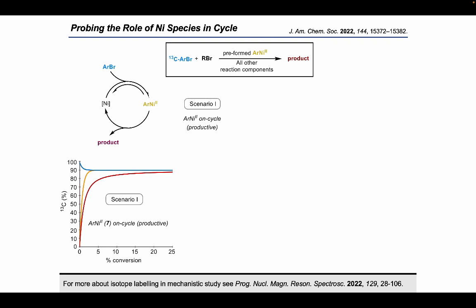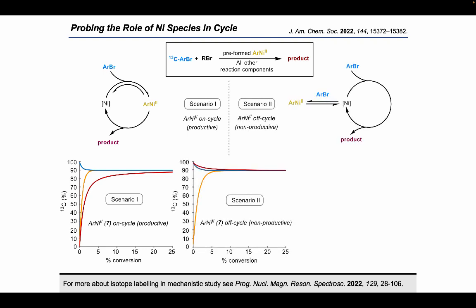Now, imagine a second scenario where this time the aryl nickel species, instead of being directly on cycle, is just the main resting state, but it's a reservoir of nickel, and the actual active species is a much smaller fraction of the nickel present in the reaction. This scenario is still consistent with all of the experimental observations we've made up until this point. But in this experiment, the same kind of analysis reveals a very different looking graph, where this time the product is initially formed from carbon-13 rather than from carbon-12. This provides a really helpful tool to be able to distinguish between these two scenarios.